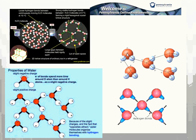In liquid water you might get one or two hydrogen bonds, but in ice we get that maximum number of hydrogen bonds between molecules. They space out to get that perfect arrangement, and when they're spaced out, they're less dense. This is really important for aquatic ecosystems — certain animals can still live in a lake in the middle of winter because only the top layer freezes, and since ice is less dense, it stays on top.